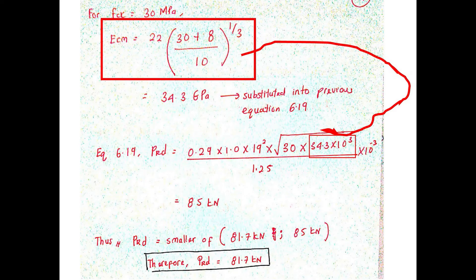Before we can calculate equation 6.19, we first need to determine the elastic modular value ECM. The elastic modular is calculated as highlighted in the red box, which gives a design resistance of the single-headed shear connector from equation 6.19 as 85 kN. Because PRD calculated from equation 6.18 is lesser than equation 6.19, the design resistance of the single-headed shear connector is taken as 81.7 kN.